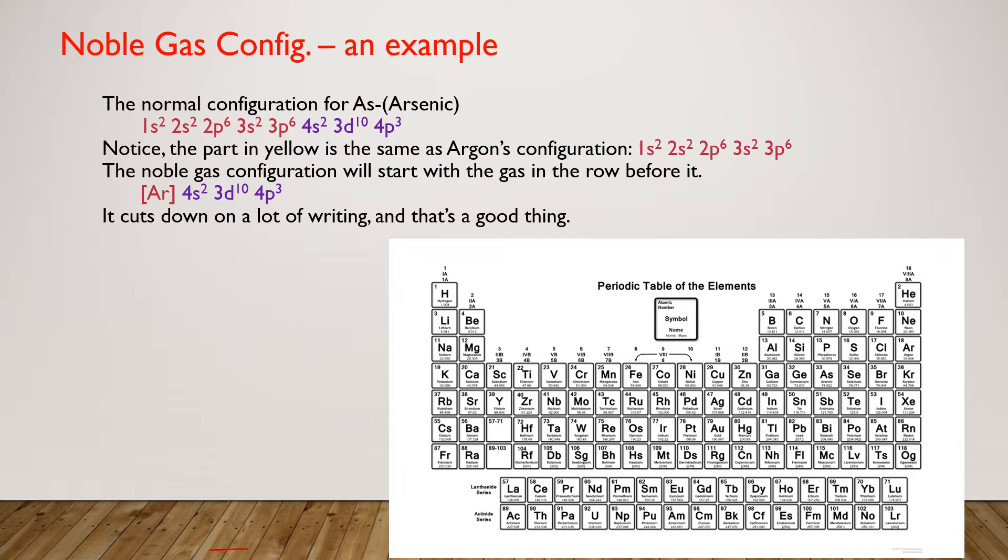Let's talk about the normal configuration for arsenic. Here's arsenic on your periodic table, and normally you would have to write 1s2, 2s2, 2p6, 3s2, 3p6, 4s2, 3d10, 4p3. It's not the longest one, but it's still inconvenient.